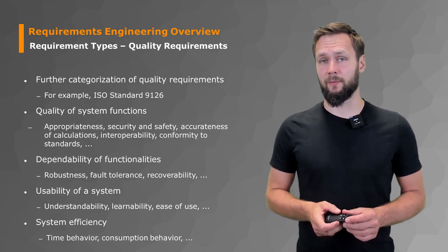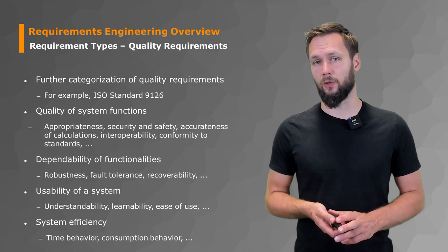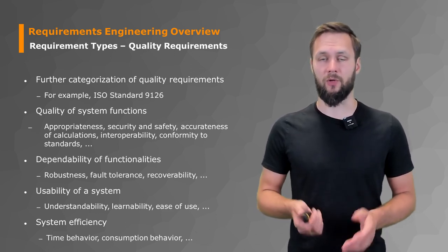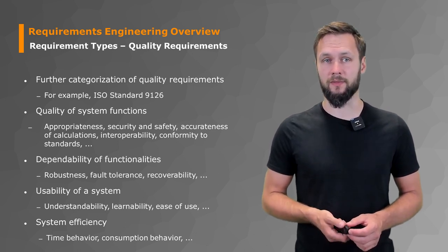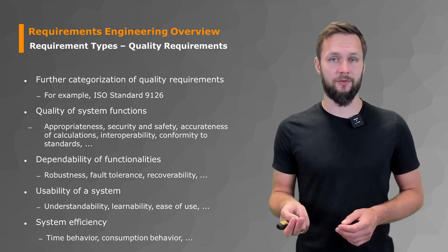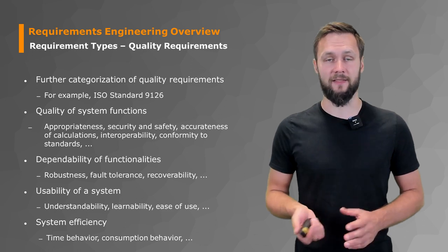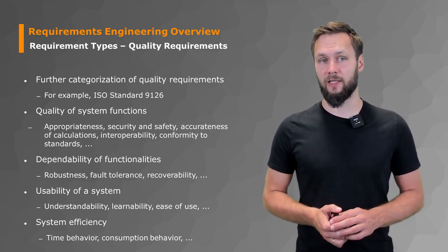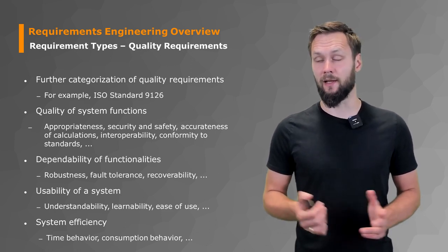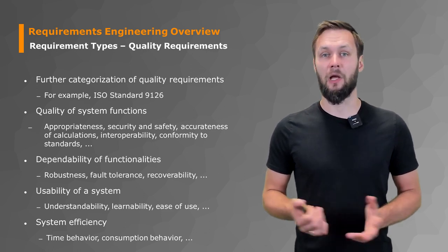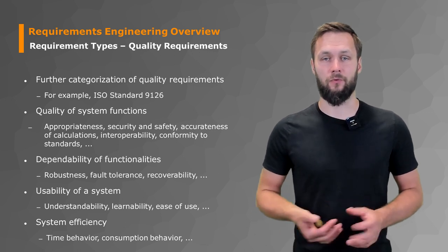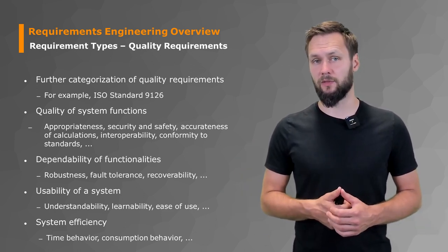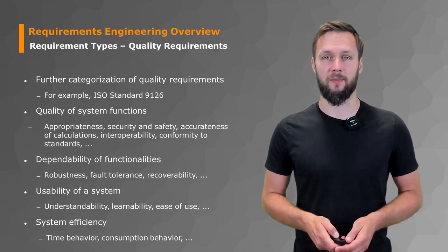You can further categorize quality requirements. Quality of system functions includes appropriateness, security and safety, which could become relevant in contexts like self-driving cars or autonomous systems, but also accurateness of calculations. If we go back to our calculator, are two decimal values okay, or do I need 20, 30, 40 decimal values to make sense of my calculations? Interoperability could also be relevant or conforming to standards. We also have dependability of functionalities like robustness, fault tolerance, recoverability. What happens if the software that controls the brakes of an autonomous car crashes? It would be nice if we can get back into some kind of fault tolerance safety mode or at least recover from system failure to prevent any crashes. Usability of systems goes in that direction as well, and system efficiency.